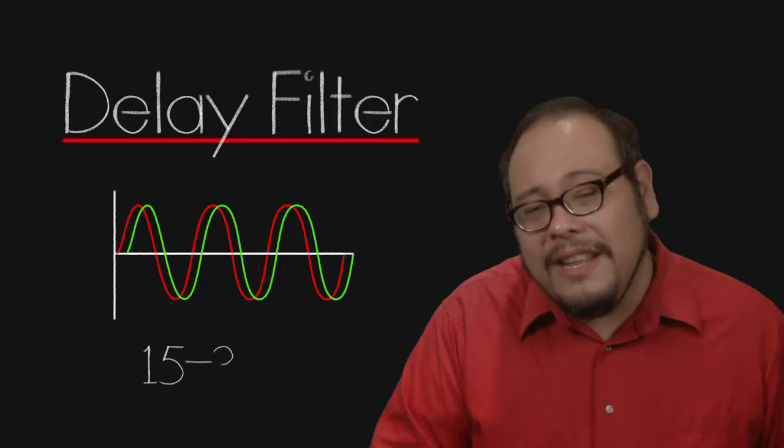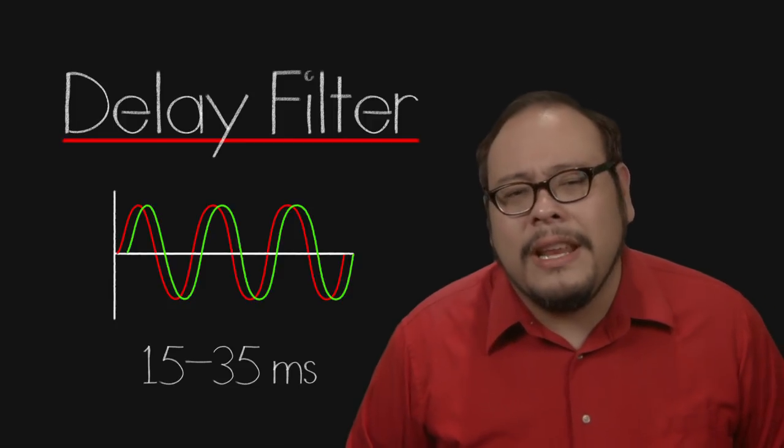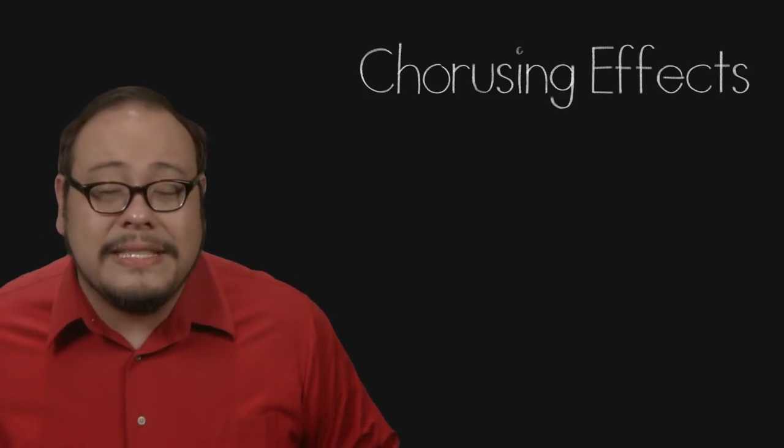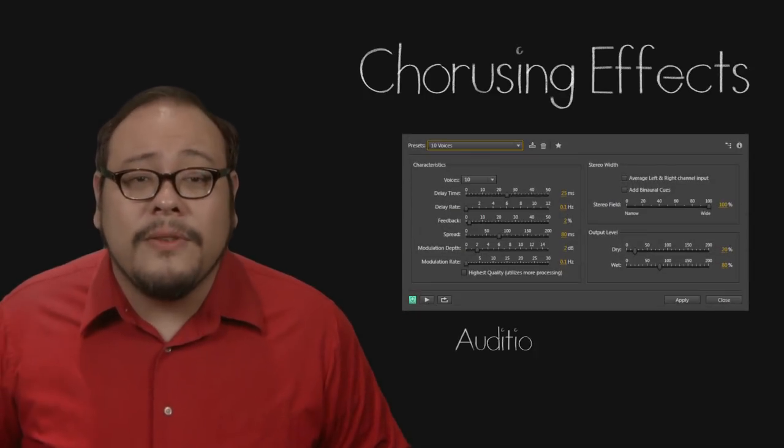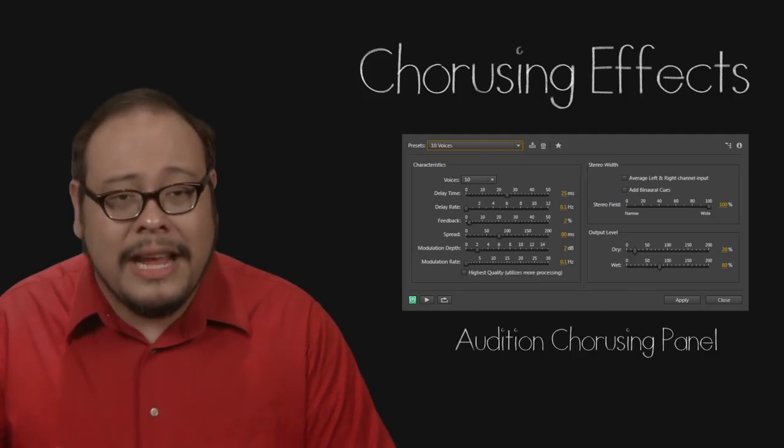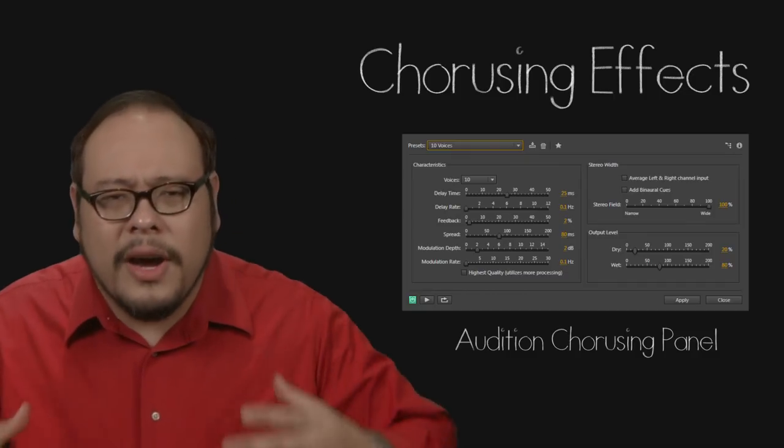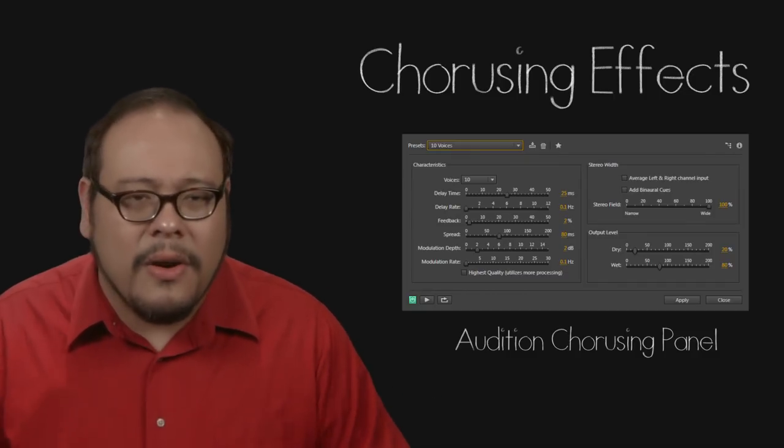With a delay of 15-35ms we start getting chorusing effects where the brain is starting to perceive more than one voice or instrument being sounded. Chorusing filters also can vary the pitch and timings of the delays for even more effects. This may be useful for creating bizarre and otherworldly characters for your audio.